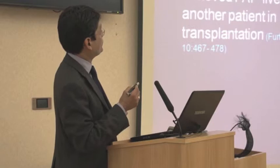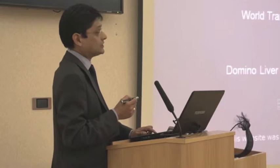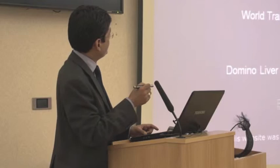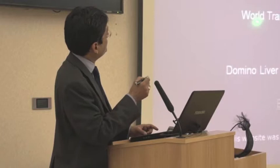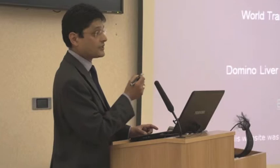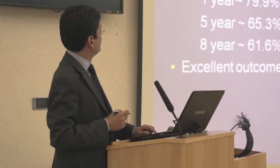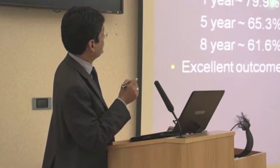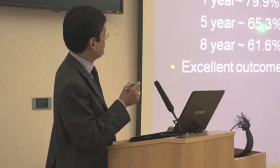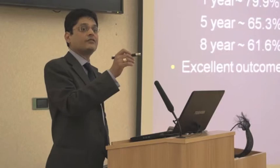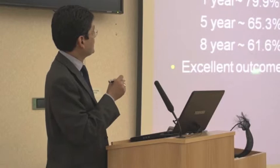The domino transplant with an FAP donor was first done in Portugal in 1995, and since then more than a thousand domino transplants have been done all over the world. The information is maintained in the Domino Liver Transplant Registry, which is part of the FAP World Transplant Registry, available at an open access website. The most recent published results of the DLTR database are excellent: one-year survival of 80%, five-year survival of 65%, eight-year survival of 61%. These excellent outcomes likely justify the small risk of symptomatic amyloid developing in the recipient.